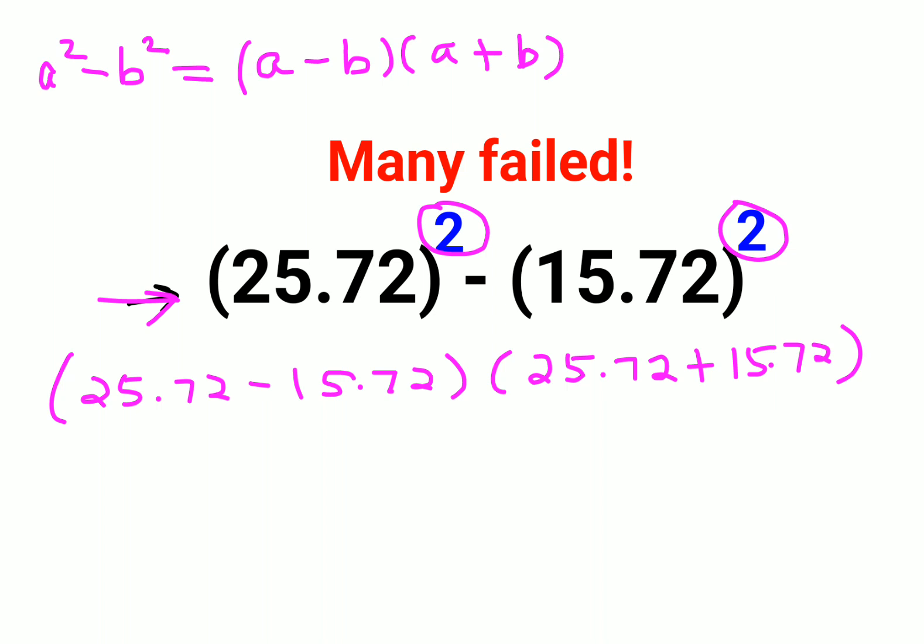So now if you see, the decimal part in both cases are the same, so it will become 0.0, and 25 minus 15 is nothing but 10. And when you add this over here, we get 41.44.